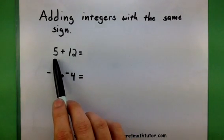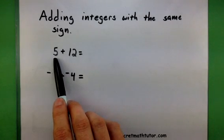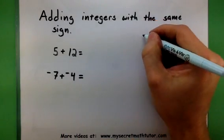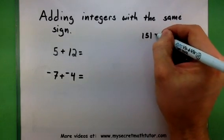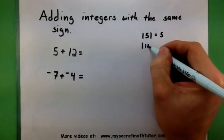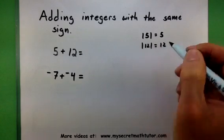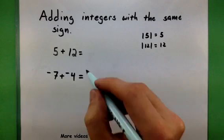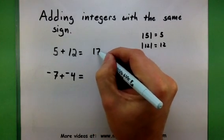In my first one, I want to add the absolute value of 5 with the absolute value of 12. So let's see, the absolute value of 5 is just 5, and the absolute value of 12 is just 12. So I think to myself, what is 5 plus 12? And I get an answer of 17.